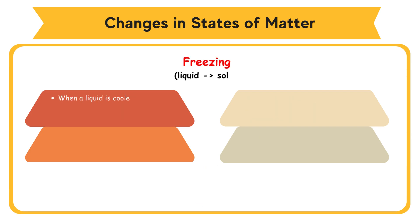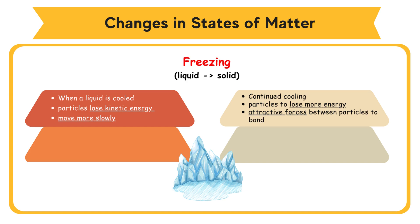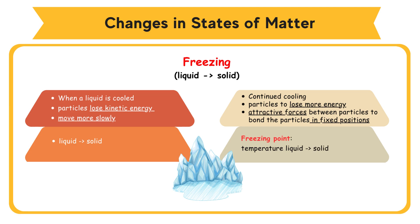Freezing. When a liquid is cooled, the particles lose kinetic energy and move more slowly. Continued cooling will cause the particles to lose more energy and allow the formation of attractive forces between particles, to bond the particles in fixed positions. At this point, the liquid starts to become a solid. The temperature at which a liquid changes to a solid is called the freezing point.